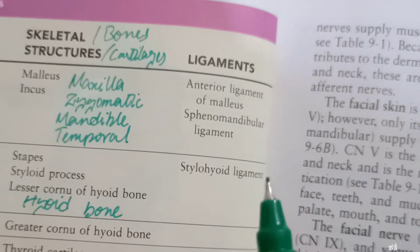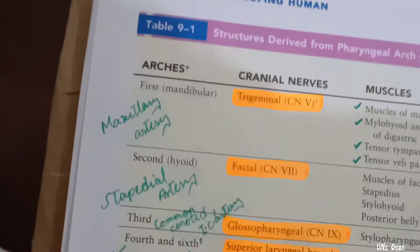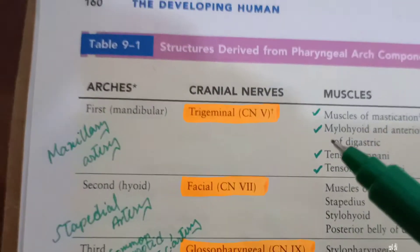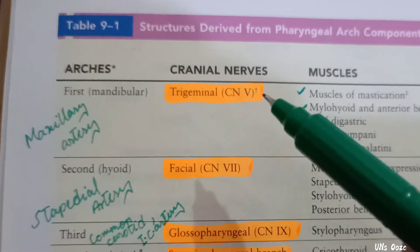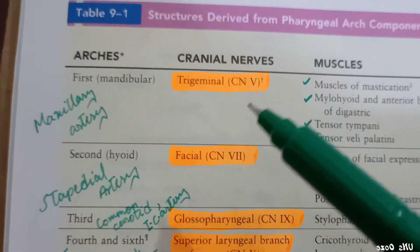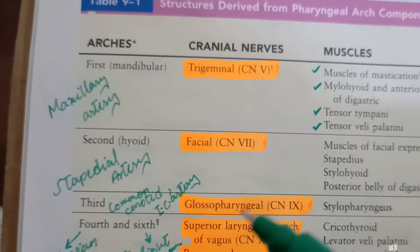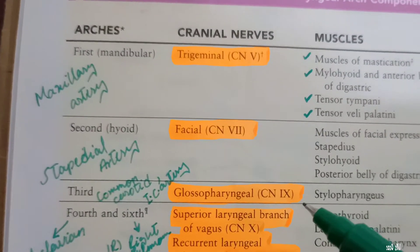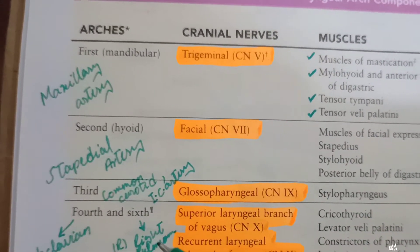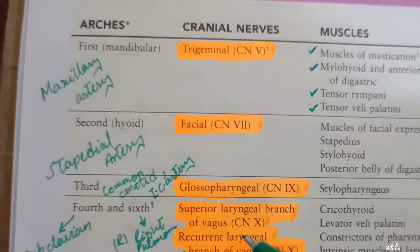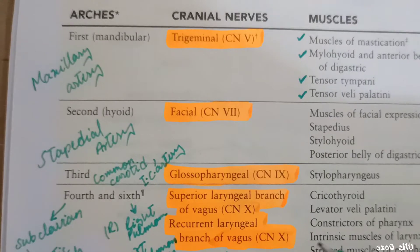For nerves: the first pharyngeal arch (mandibular arch) is supplied by the trigeminal nerve — cranial nerve 5. The second pharyngeal arch is supplied by cranial nerve 7 (facial nerve). The third arch is supplied by the glossopharyngeal nerve — cranial nerve 9. The fourth and sixth arches are supplied by the superior laryngeal branch and the recurrent laryngeal branch of the vagus nerve — cranial nerve 10.